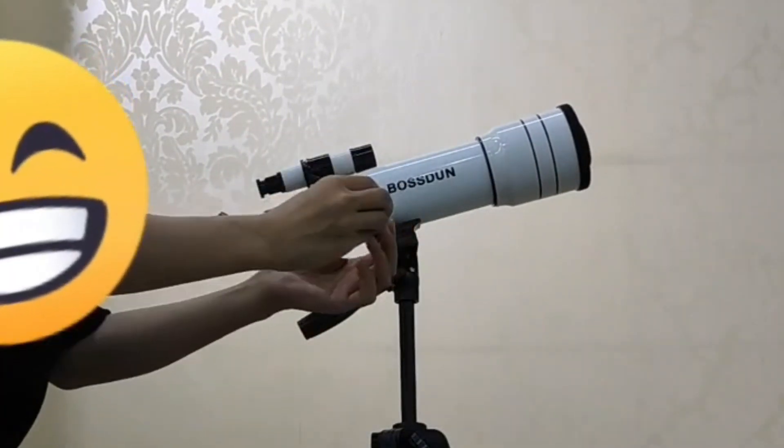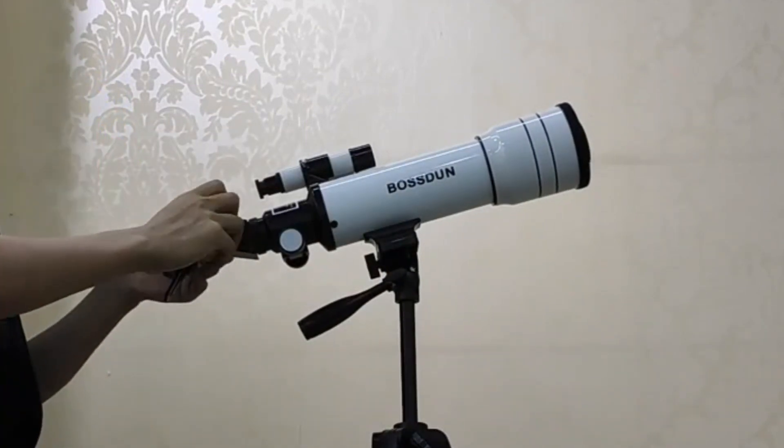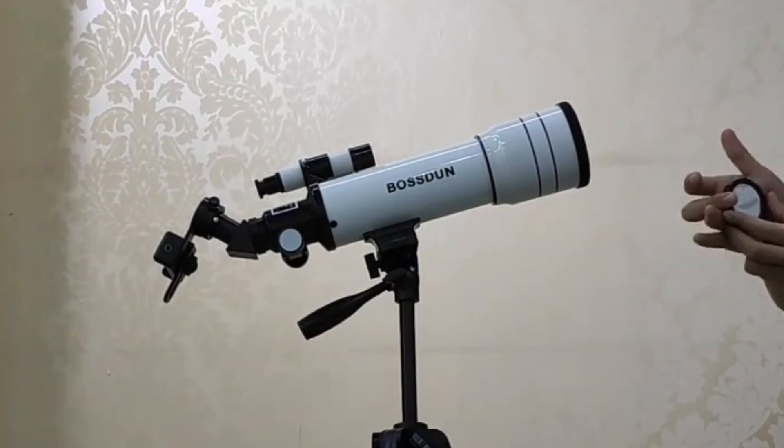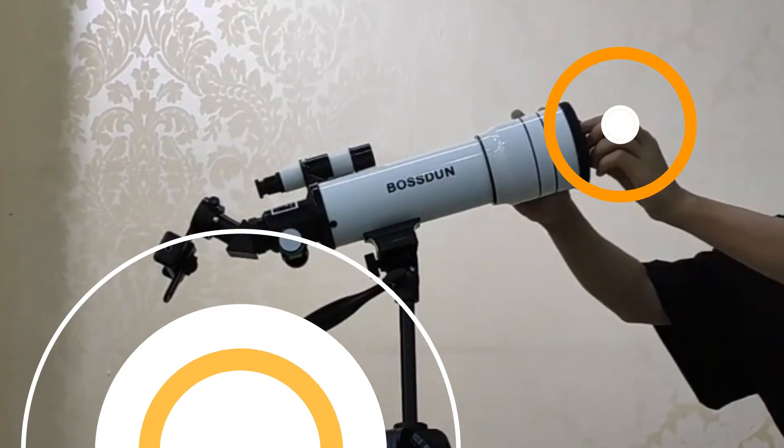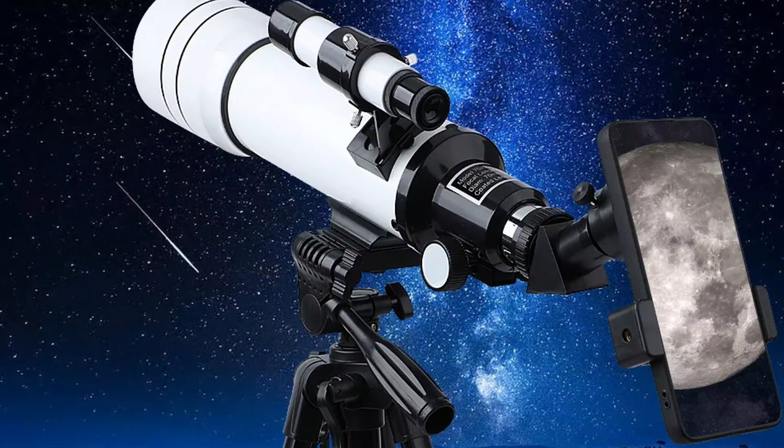The telescope is constructed from sturdy metal, offering durability and reliability. It comes with three high-quality eyepieces, a Barlow lens with 5x magnification, a 45-degree zenith mirror, a 5x42 finder scope, and an adjustable tripod.